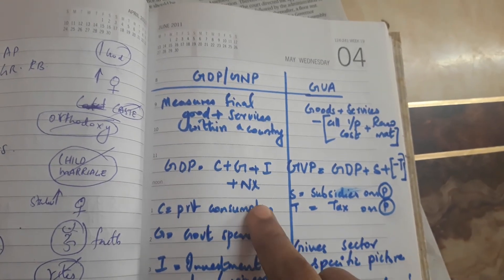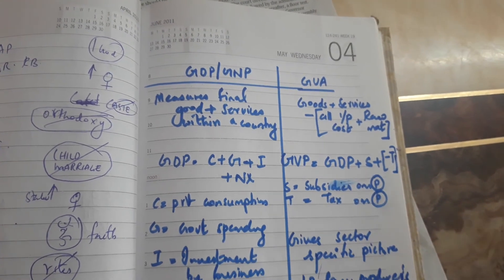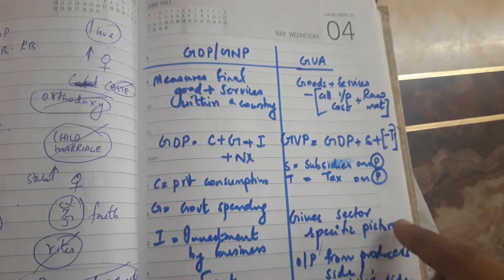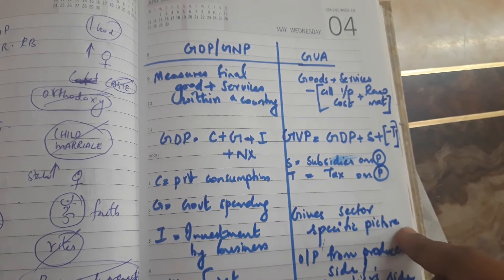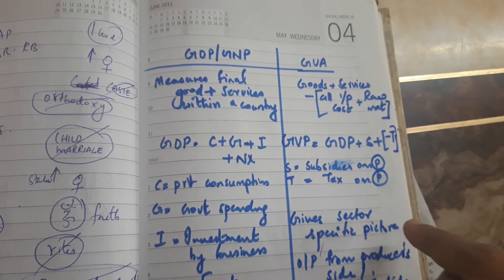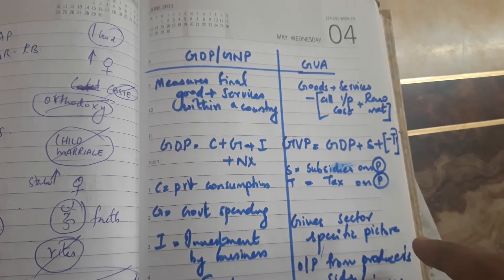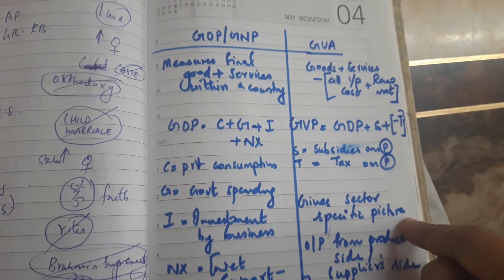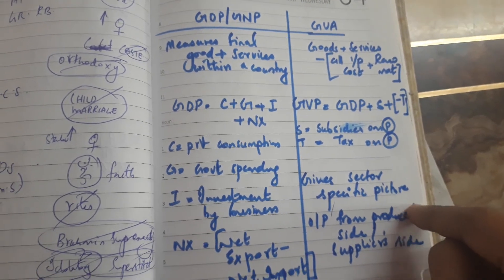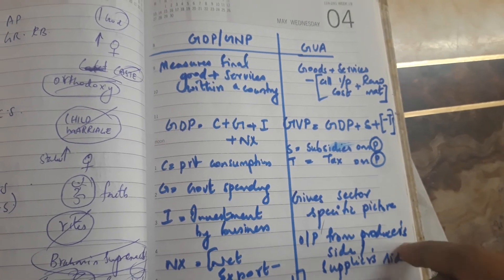GDP gives a picture of the whole country, whereas GVA gives a clear picture in each of the specific sectors. So GVA provides a sector-wise breakdown and is the output from the producer's side.